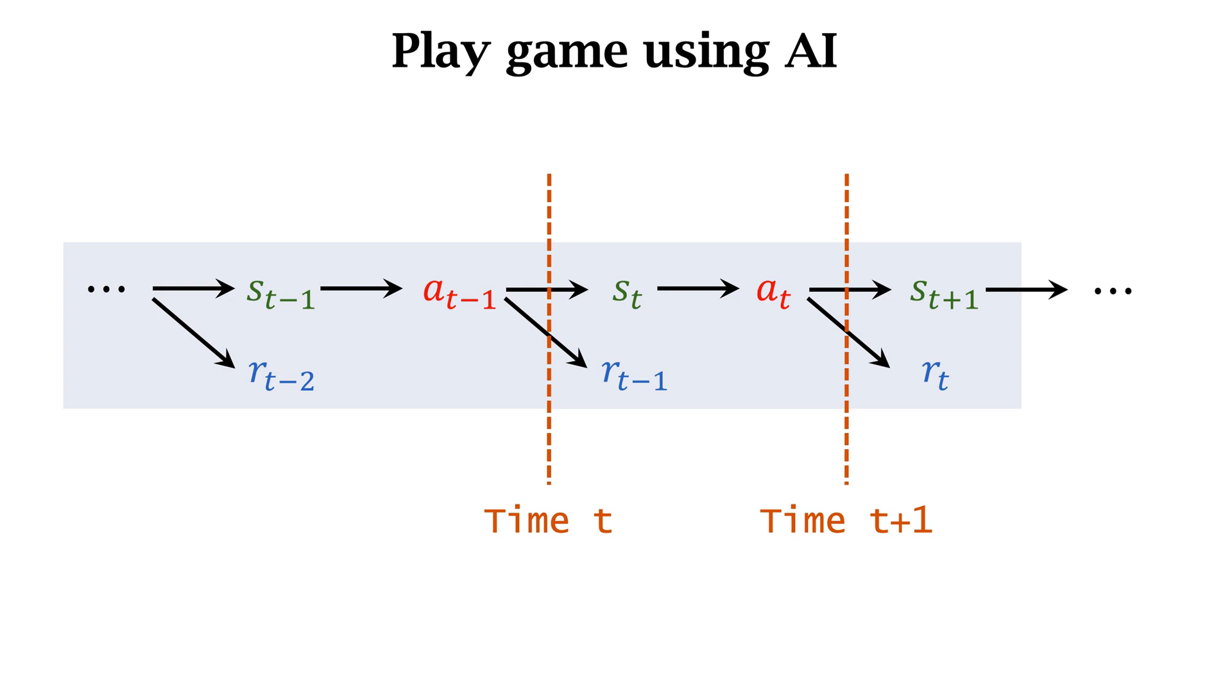What is reinforcement learning? It means learning a policy from the agent-environment interactions. We collect trajectories of the agent and use the trajectories for learning the policy.